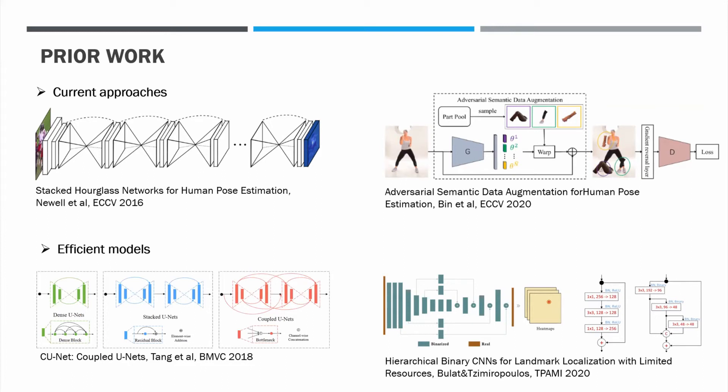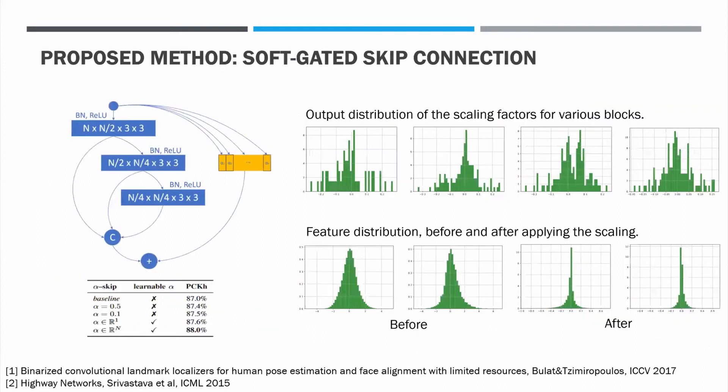In our work, with minimal changes to the already established hourglass structure, we propose to look at an often overlooked component — the skip connection mechanism — analyzing its potential detrimental effect and proposing a solution to alleviate this.